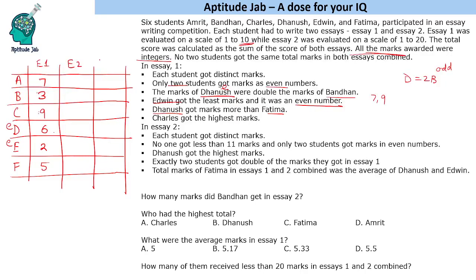Now we will fill SA2 and find the total scores. Each student got distinct marks again, no one got less than 11 marks, and only 2 students got marks as even numbers — so 2 even and 4 odd here as well. Dhanush got the highest marks. Exactly 2 students got double the marks they received in SA1, and double always produces an even number, so those 2 students are the ones with even marks in SA2.